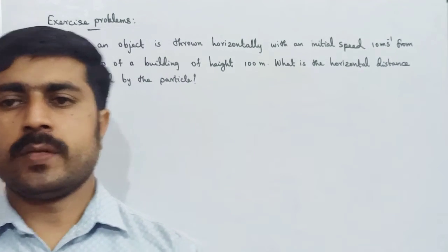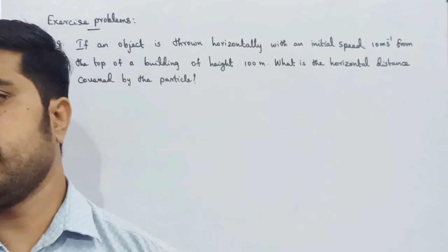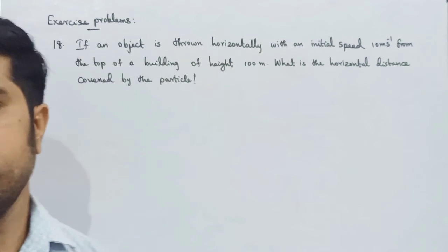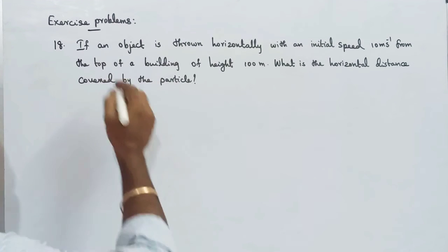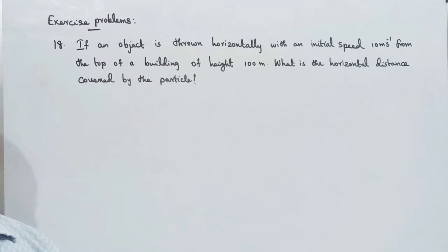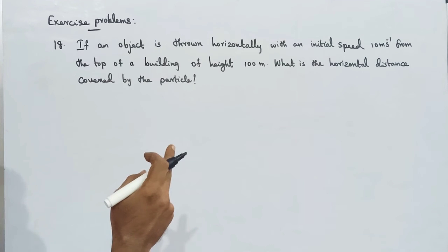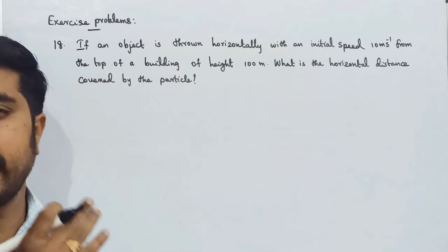Hi students! We are now in the 11th physics class, 2nd unit, main exercise. This is a very interesting and easy problem — problem number 18. If an object is thrown horizontally with an initial speed of 10 meters per second from the top of a building of height 100 meters.